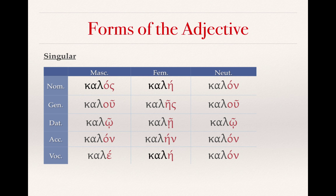The definite article is a segue into the forms of the adjective, which are very similar. Here in this chart, the endings in red are very similar to those of the nouns and the definite article we've seen. This is the Greek word for 'good' or 'beautiful.' The singular forms are: kalas, kalay, kalon; kalu, kalays, kalu; kaloh, kalay, kaloh; kalon, kalen, kalon; kalay, kalon.